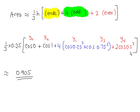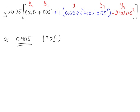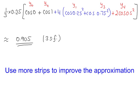So using the formula, the area is approximately 0.905, rounded to three significant figures. To improve on this approximation, we need to use more vertical strips.